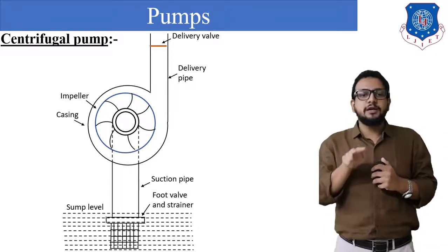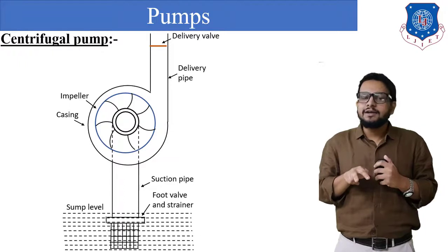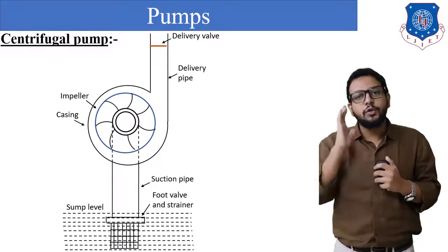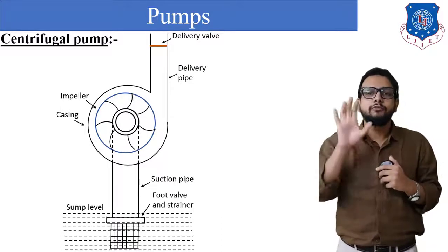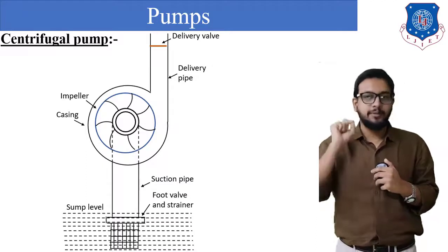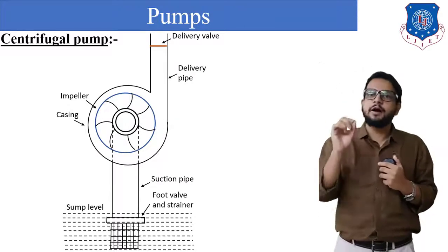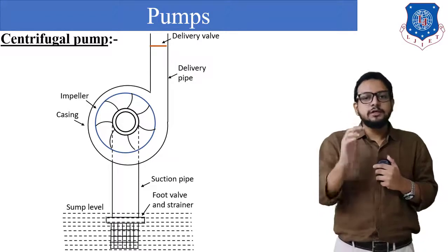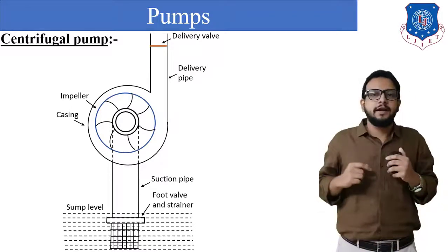The suction pipe at the bottom is inserted into a sump from where water has to be lifted. Within the sump, a valve called a foot valve is connected to the suction pipe. The foot valve is a non-return type valve which allows liquid flow only in the upward direction — backflow of liquid back into the sump is prevented. Along with the foot valve, there is a strainer whose purpose is to remove foreign particles such as mud from the water, allowing only liquid to enter into the suction pipe.